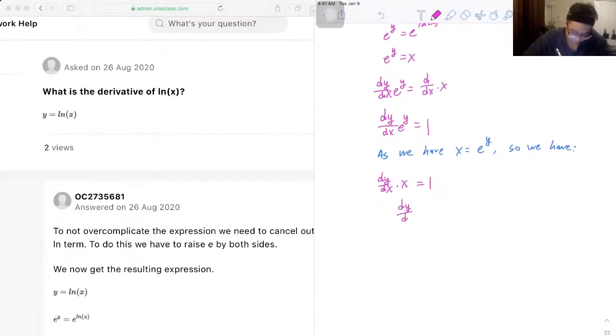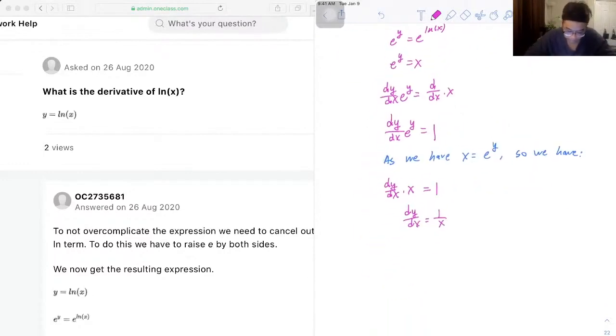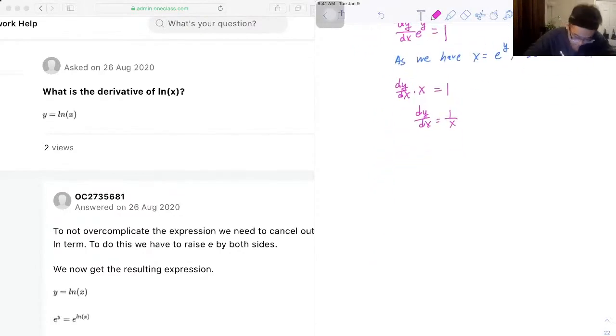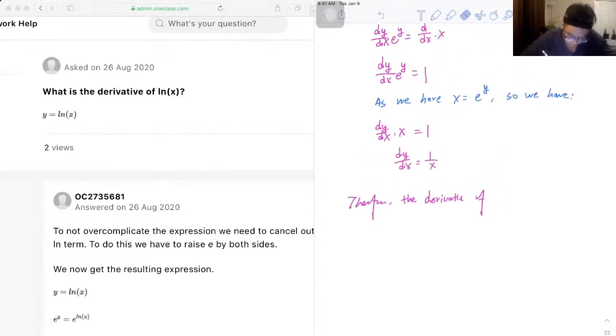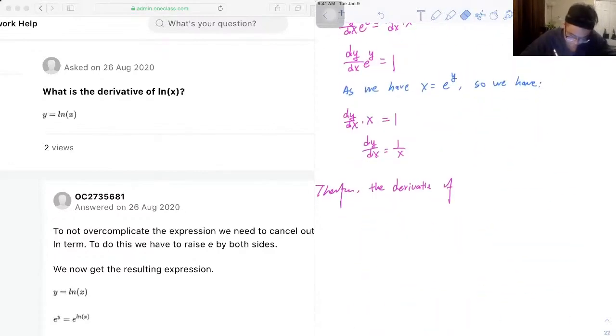And dy/dx is just equal to 1 over x. So therefore, the derivative of ln x is 1 over x.